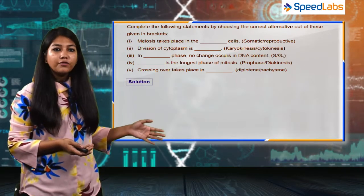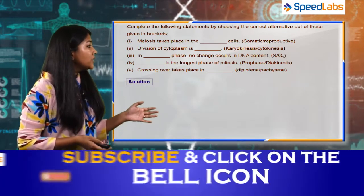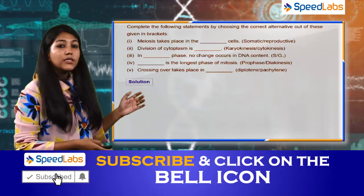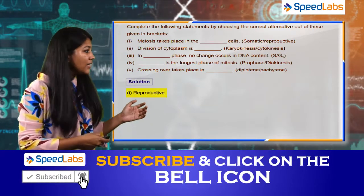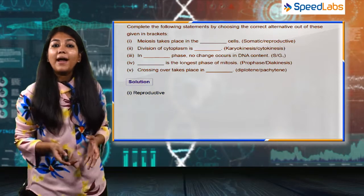The first part of this question says meiosis takes place in blank cells. The answer to this question is reproductive cells, right? We all know that somatic cells.